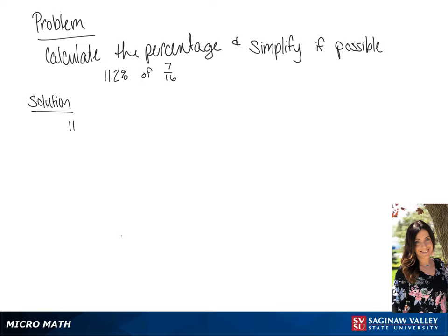We want to calculate 112% of 7 sixteenths, so we're going to put 112 over 100 times 7 over 16. Before we multiply, we're going to simplify the first fraction. We will simplify that to 28 over 25.